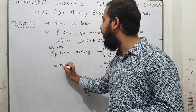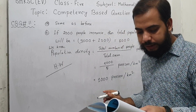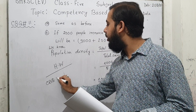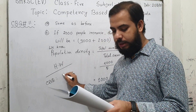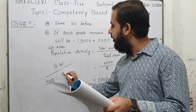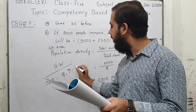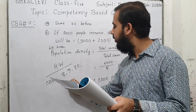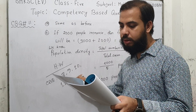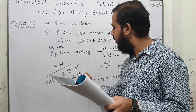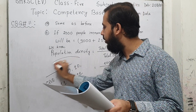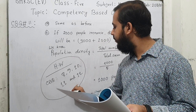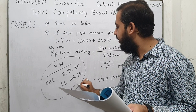Your homework will be CBQ questions number 8, 9, 10, 11, and 12 — five questions in total from the Data Math Solution magazine.